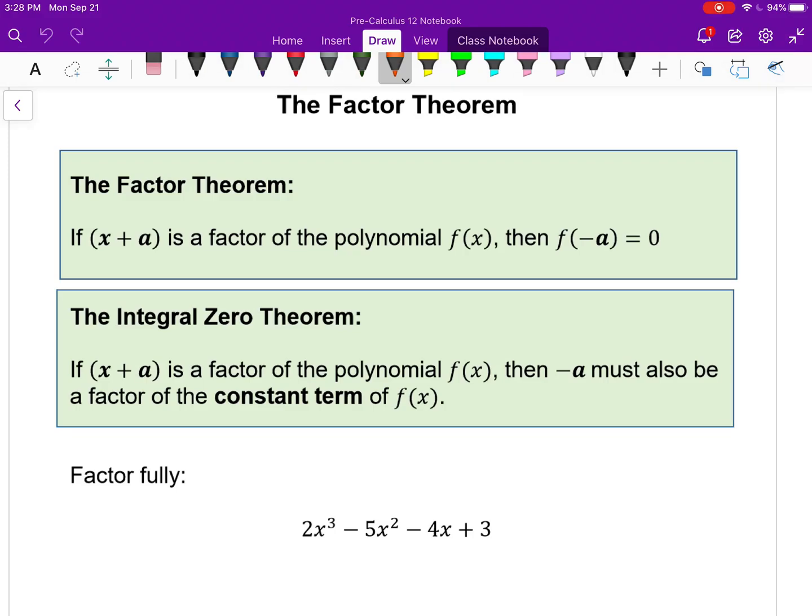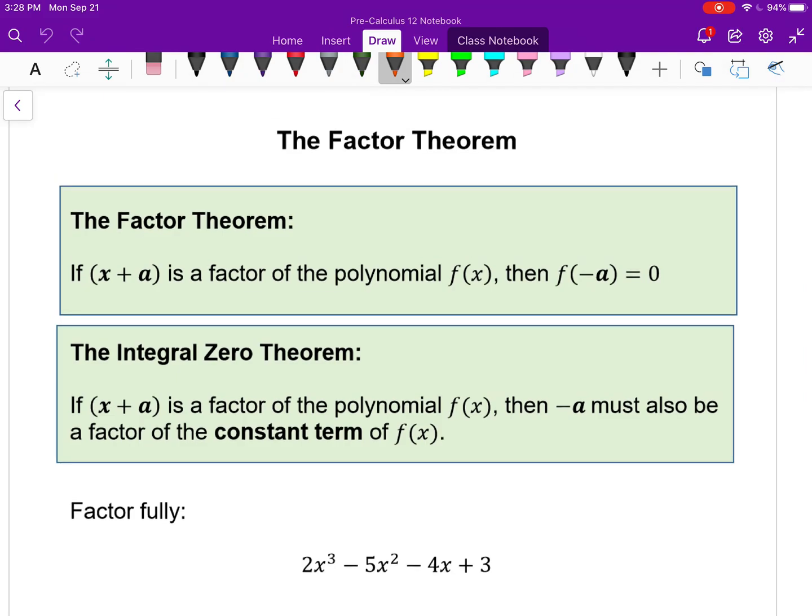All right, so this lesson is really about how to factor more complex polynomials, building on what we did last day with synthetic division and long division. This lesson is about factoring and it's called the Factor Theorem. The Factor Theorem states that if x + a is a factor of some polynomial, then if you put -a into the polynomial, you're going to get out a zero. Remember, that means there's a remainder of zero. Essentially, this is just a consequence of the remainder theorem.